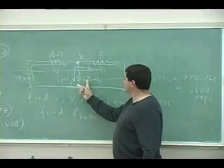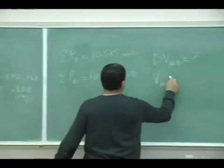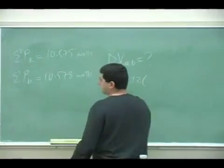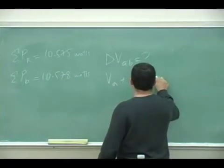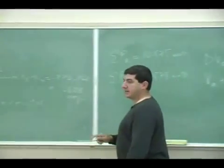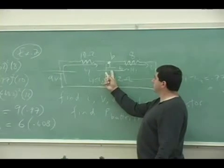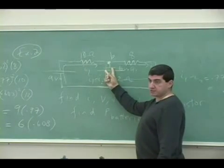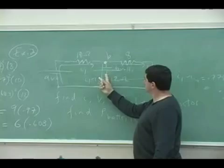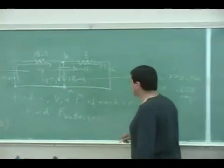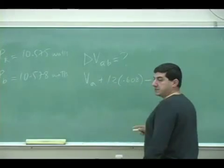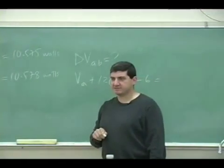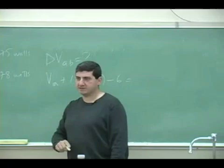So I'm going to gain 12 times I1 minus I2, which is 0.608. Then I'm going to lose 6 volts here, because I'm going from positive to negative. And then I'm going to end up at VB.